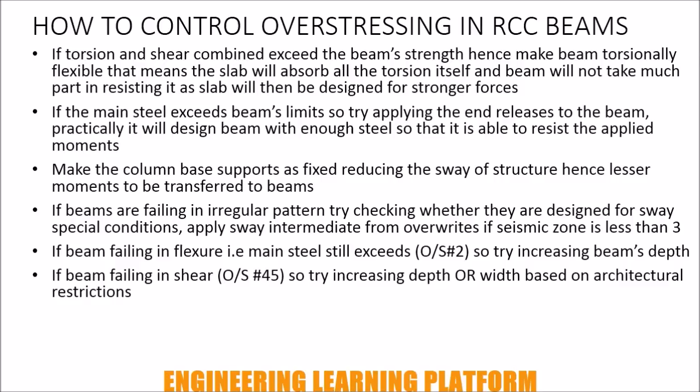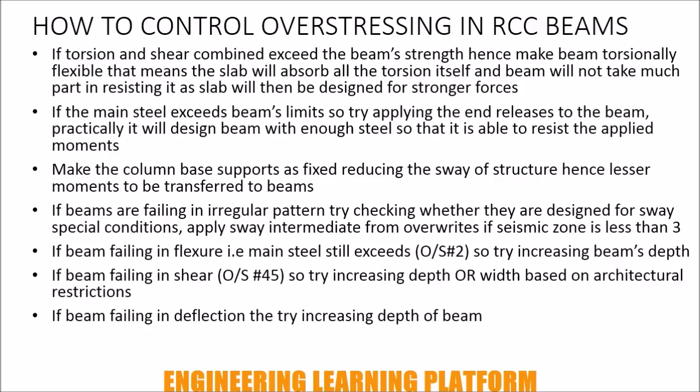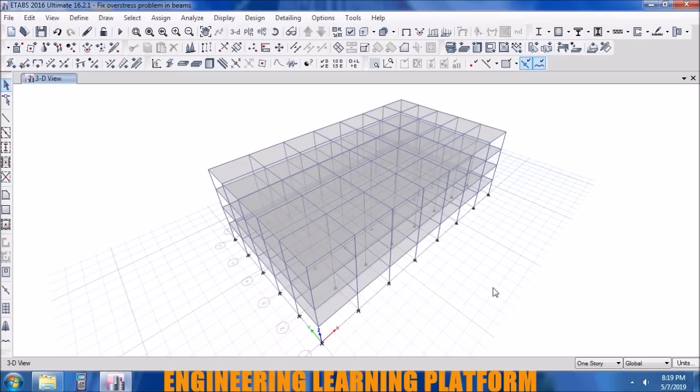If the beam is failing in flexure — i.e., main steel exceeds overstress 2 — try increasing the beam depth. If the beam is failing in shear, try increasing the beam depth or width based on architectural restrictions. If the beam is failing in deflection, increase the depth. Now we will see how each of these works for passing a beam.